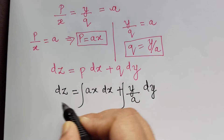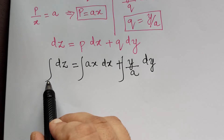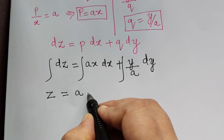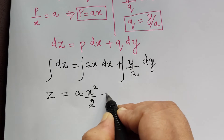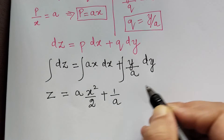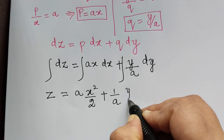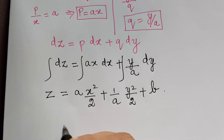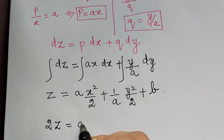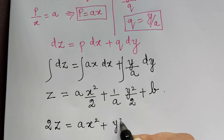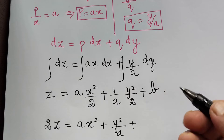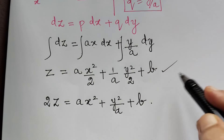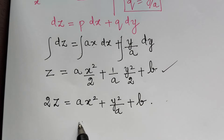Integrating on both sides: z equals a times x squared over 2 plus 1 by a times y squared over 2 plus constant b. This can also be written as 2z equals ax squared plus y squared over a plus b. Either form is an acceptable answer.